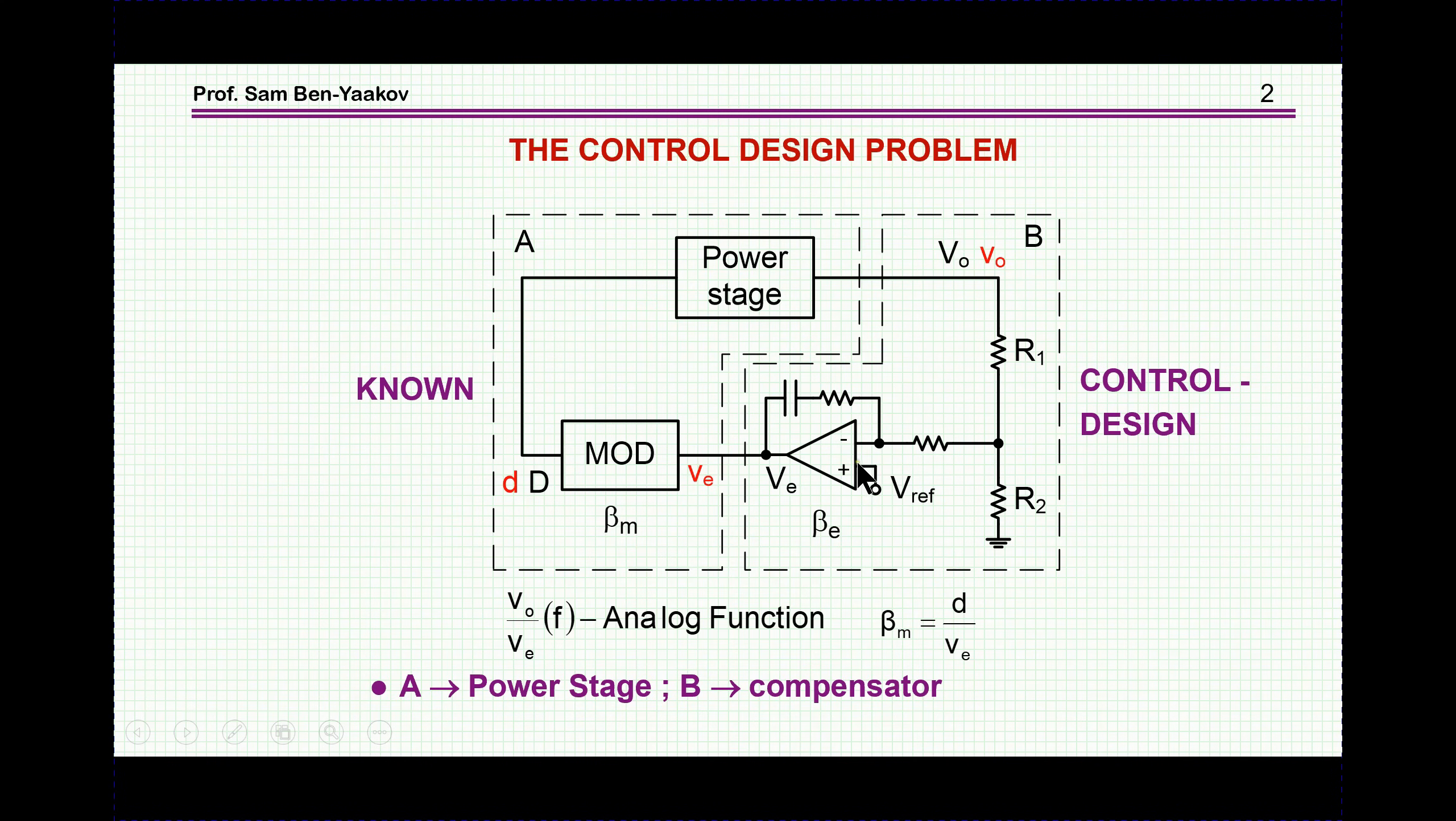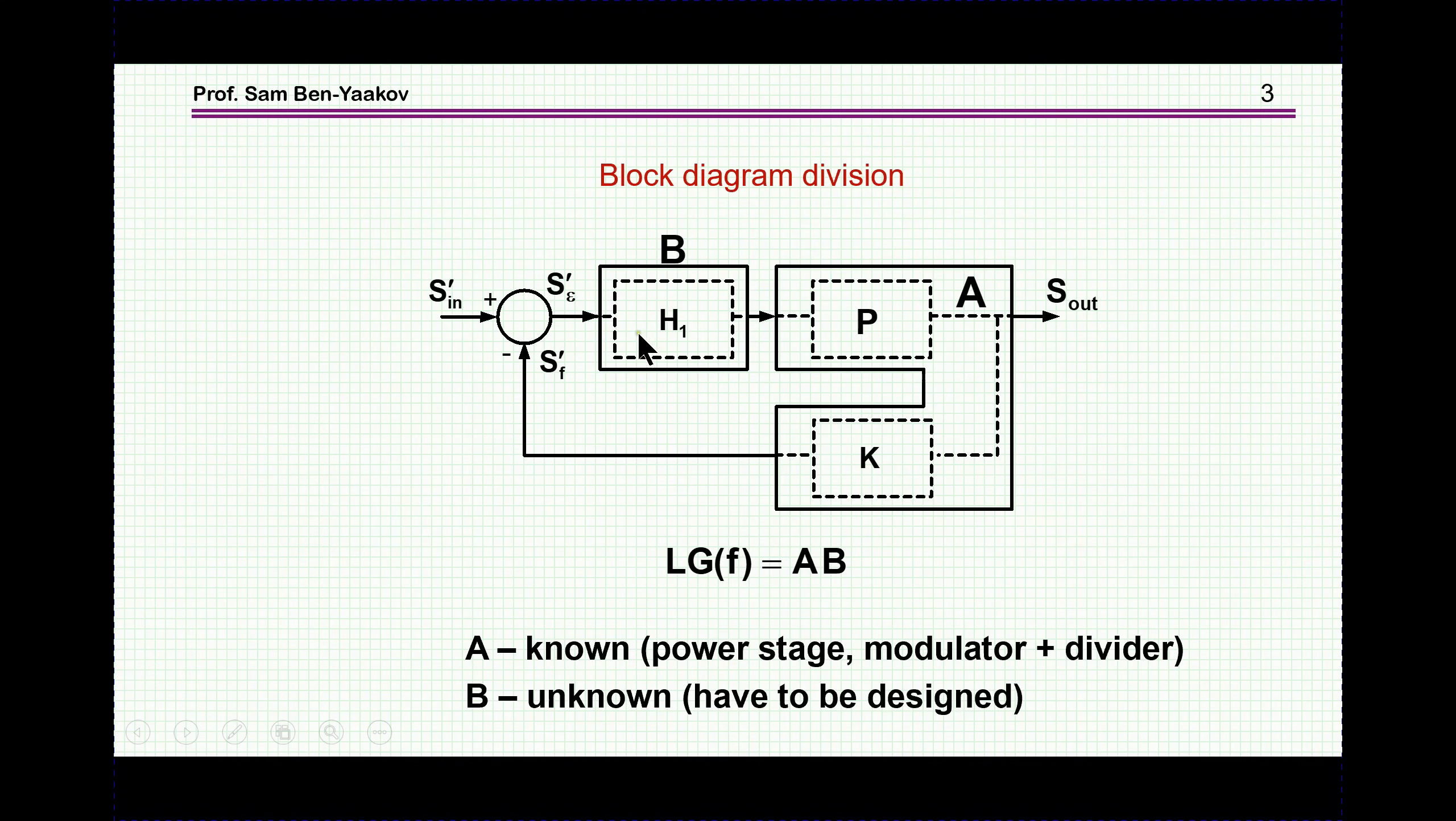In this case, I'm showing just an amplifier with some phase compensation here. Of course, it could take very many configurations. So the problem is to design this part. Now we have here a feedback and there is a loop gain. And the loop gain is the product of this part A and part B. So we can see it here in a block diagram. This is the reference. This part is block B. This is the compensator or controller. This is the plant, including here the modulator. K is actually the voltage divider. So this is part A. This is part B. And the design problem or control design problem is actually to come up with this part.